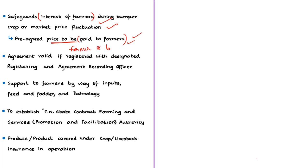This agreement is valid only when registered with the designated registering and agreement recording officer. The act also mandates support to farmers for agriculture production and rearing of livestock. This support will be provided by the contract farming purchaser by way of inputs, feed and fodder, and other technological support.